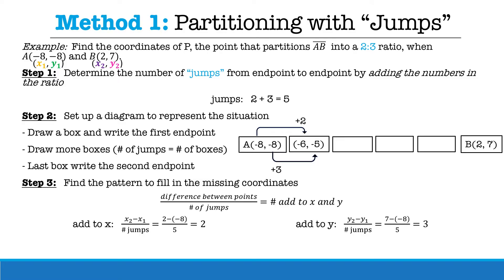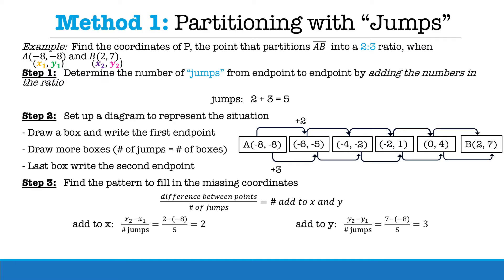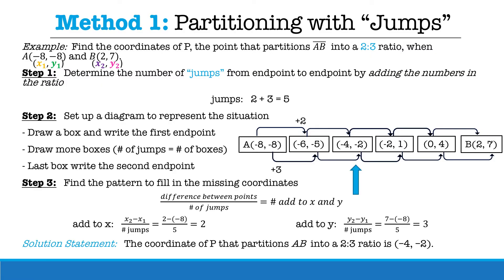This gives us the next point as negative six, negative five. Adding two to x and three to y gives negative four, negative two. Again, to get negative two, one. One more time to get zero, four. The last point gives our final endpoint, two, seven. Since we are partitioning in a two to three ratio, we go two jumps from the original point, which is negative four, negative two. Therefore, the coordinate of P that partitions AB in a two to three ratio is negative four, negative two.